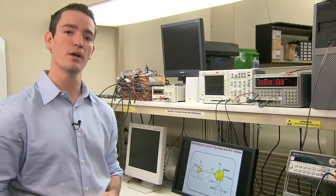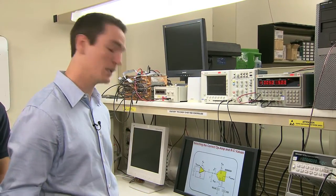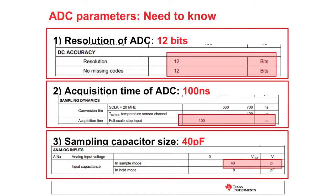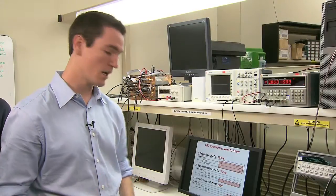Before we go into this, there are three important parameters that you really need to know and get from your ADC datasheet. First is the resolution, or the number of bits — for this one, it's 12 bits. The second most important is the acquisition time — running at full speed, it's 100 nanoseconds. Third is the sample and hold capacitor, and when it's in sampling mode, the sample capacitor is 40 picofarads.